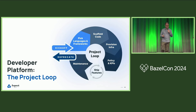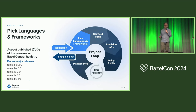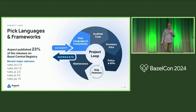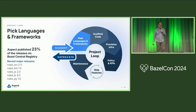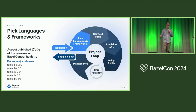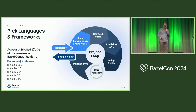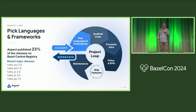So let's get started with this project loop. The first thing that you'll need to do is pick languages and frameworks that you're going to use in this new project. We've got your back — we are the open source developers of quite a few of the Bazel rule sets that you use today. In fact, 23% of the releases on the Bazel registry are from us. Notable recent releases include Rules OCI 2.0, Rules Lint 1.0, Rules JS and TS recently bumped, and Rules Py is now 1.0.